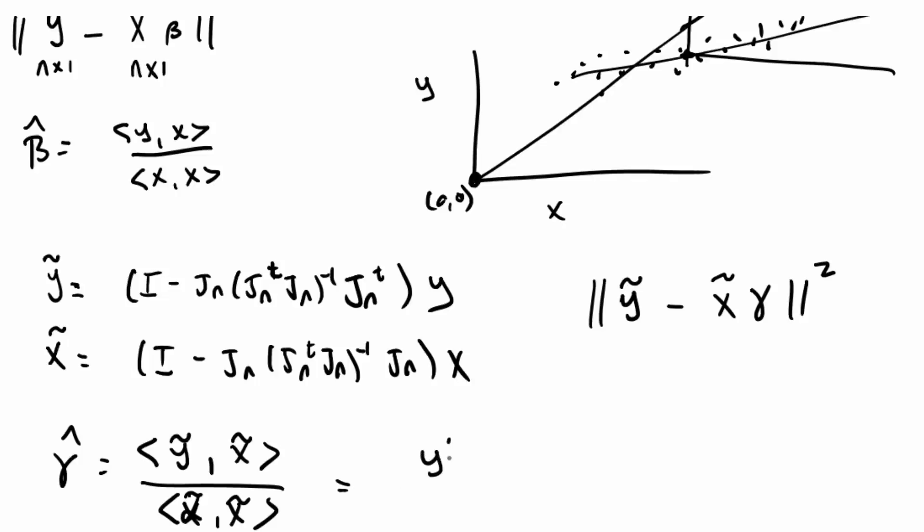Well, that is equal to y transpose times I minus, and let me just replace this matrix so I don't have to keep writing it. Let me just call it h. I minus h transpose times I minus h then times x all over x transpose times I minus h, I minus h times x.